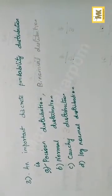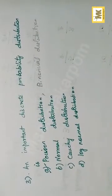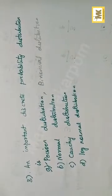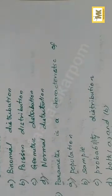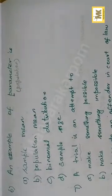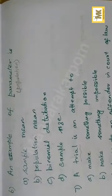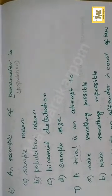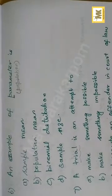Important discrete probability distribution - here the discrete is Poisson. Important continuous probability distribution is normal distribution. Parameter is a characteristic of population. An example of parameter - it always refers to population.